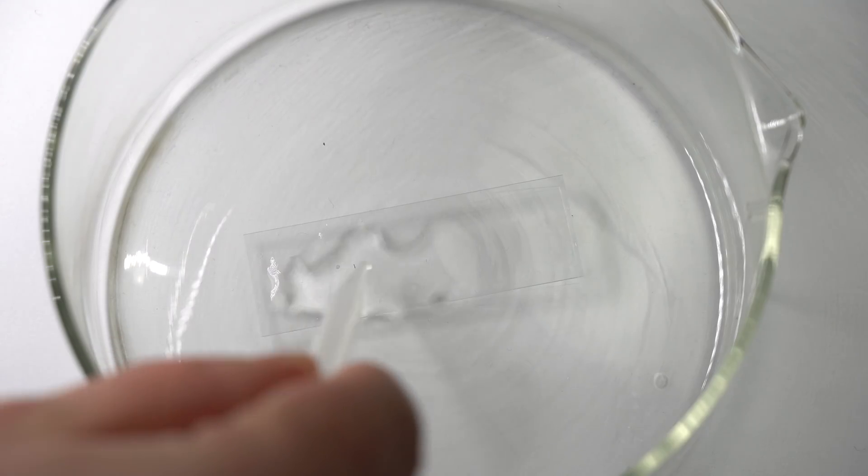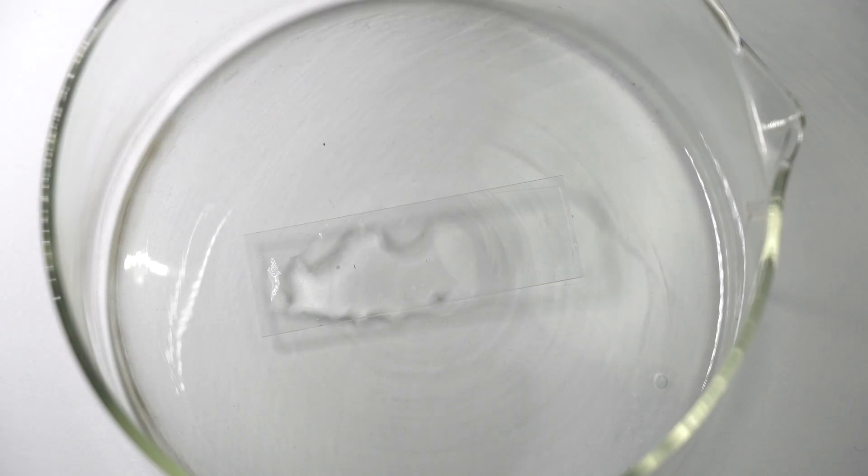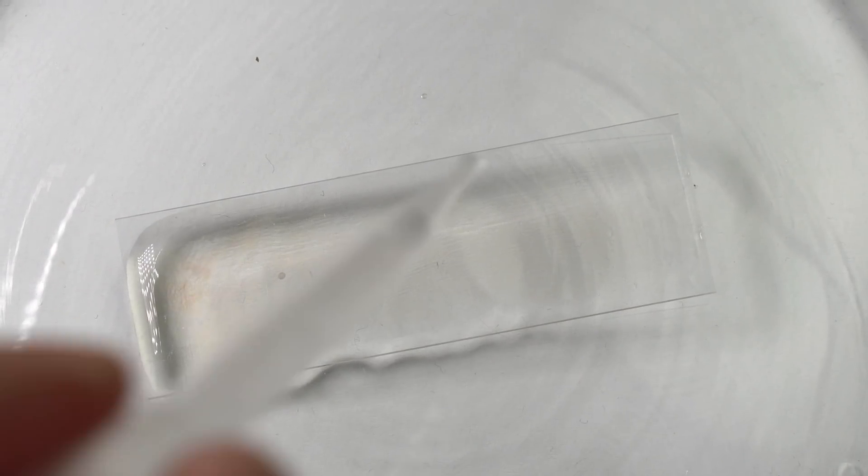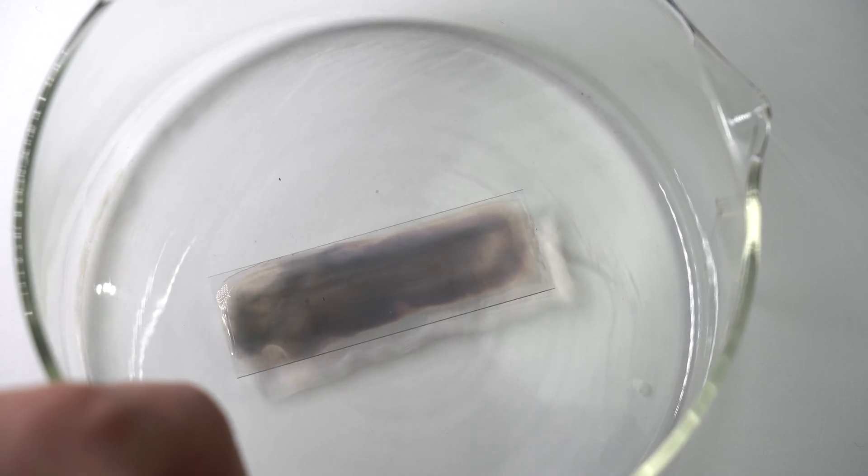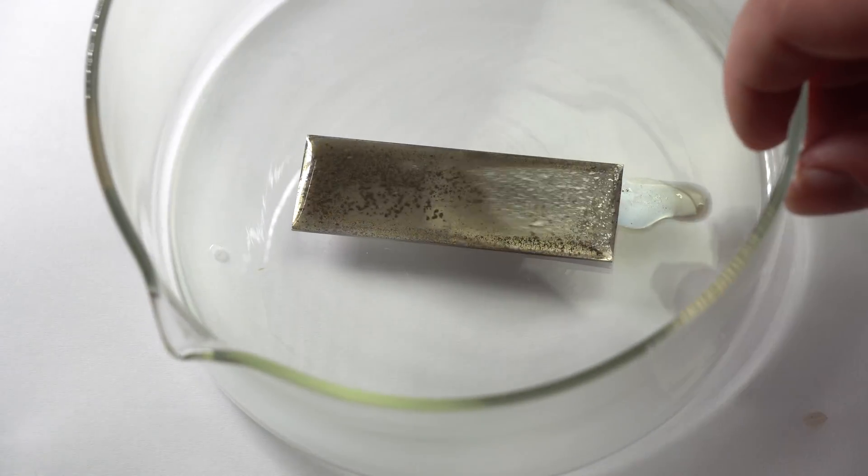Here, tin ions deposited on the glass will be the first to reduce silver, becoming centers of crystallization. Because of this, depositing silver will quicker settle on the glass rather than float on the solution.